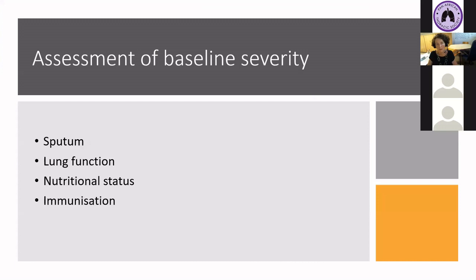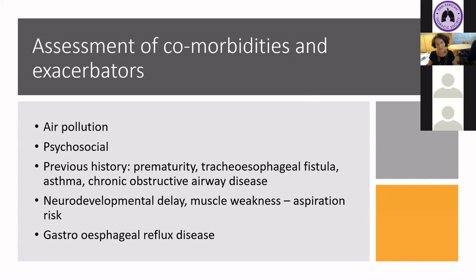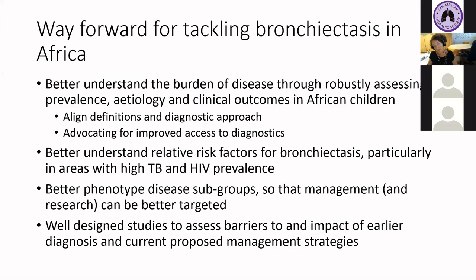Assessment of baseline needs to include sputum, lung function, nutritional status, and immunization. It's also important to highlight the assessment of co-morbidities and exacerbations — this impacts not only long-term outcome but also quality of life. So what is our way forward in tackling bronchiectasis in Africa? We clearly need well-designed studies to better understand the burden of disease — both prevalence, etiology, and clinical outcomes. For this, we need to align our definitions and our diagnostic approach and advocate for improved access to diagnostics in a way that allows us to use these efficiently and effectively in our setting.